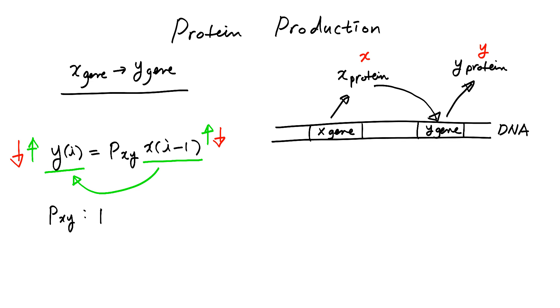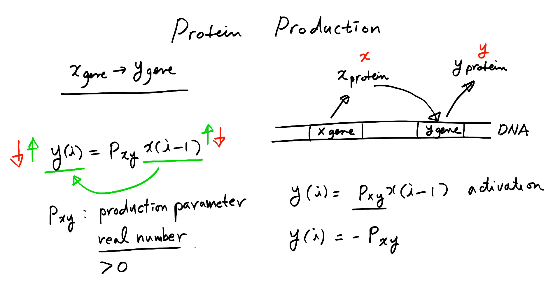PXY is a production parameter and it is a real number. We will define P sub XY as a number always positive, so it's a positive real number. So if you have Y of I equals PXY X of I minus 1, this is a positive number and we have activation. So X is activating Y. But in case we have negative P sub XY times X of I minus 1, this is a positive number but we have a negative sign, so the whole thing becomes a negative number and we have inhibition.